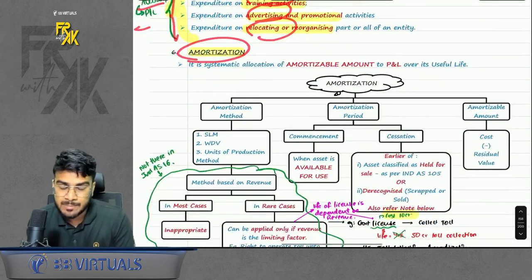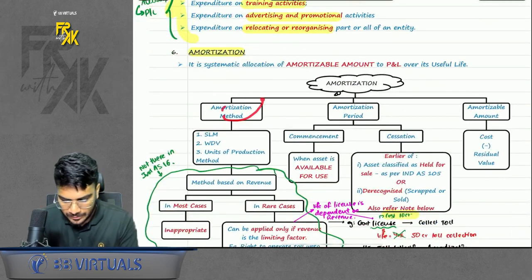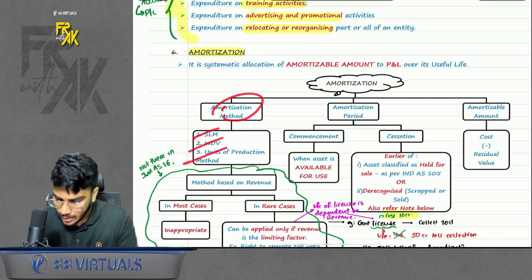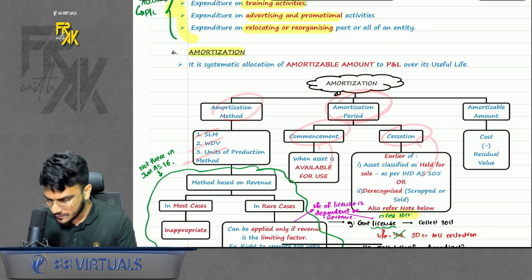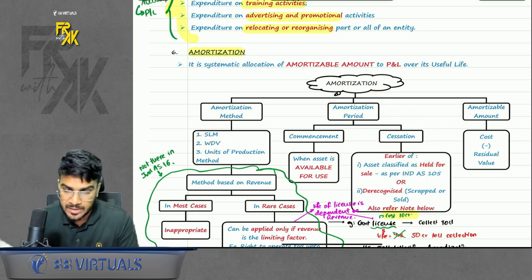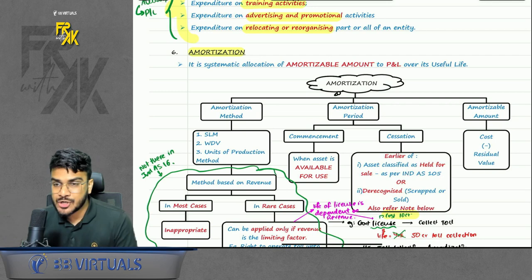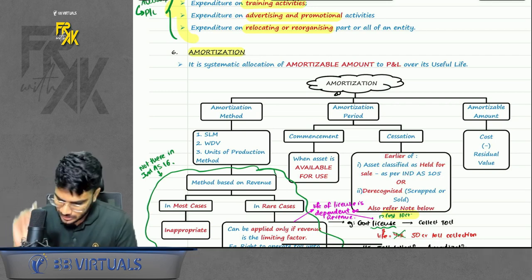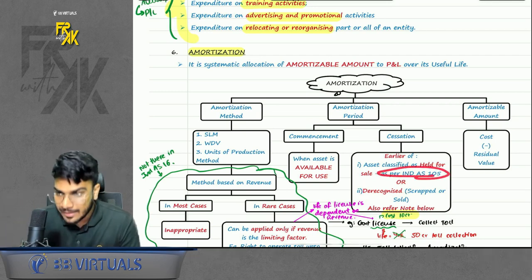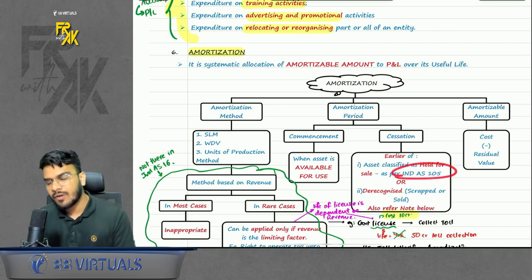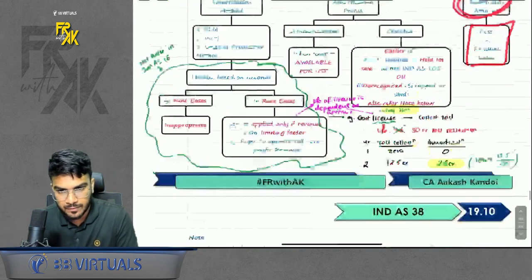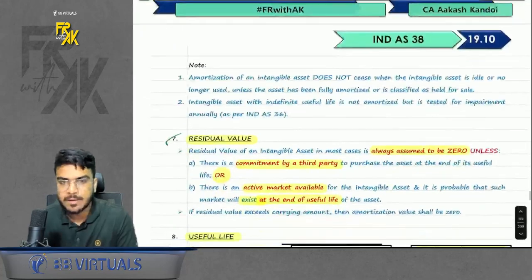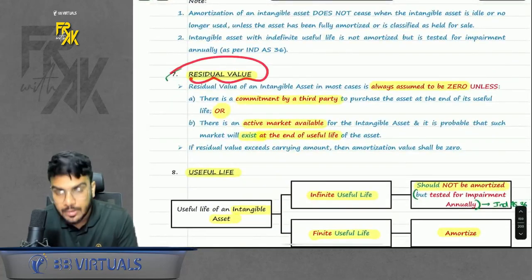The next point is amortization. Amortization method — we have three: SLM, WDV, and Units of Production. Amortization period starts when the asset is available for use and stops when either you transfer to Ind AS 105 or when the asset is out of your books. Amortizable amount is cost minus residual value.